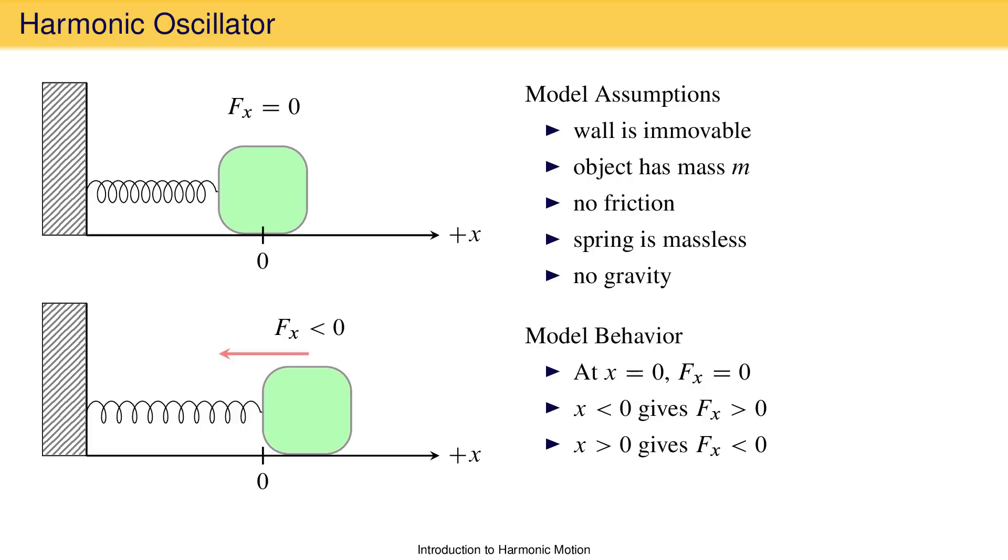After the mass comes to a stop, the force will make the mass move in the negative x-direction. The mass will move toward the left, reaching the equilibrium position and moving through that, such that the spring is compressed again.